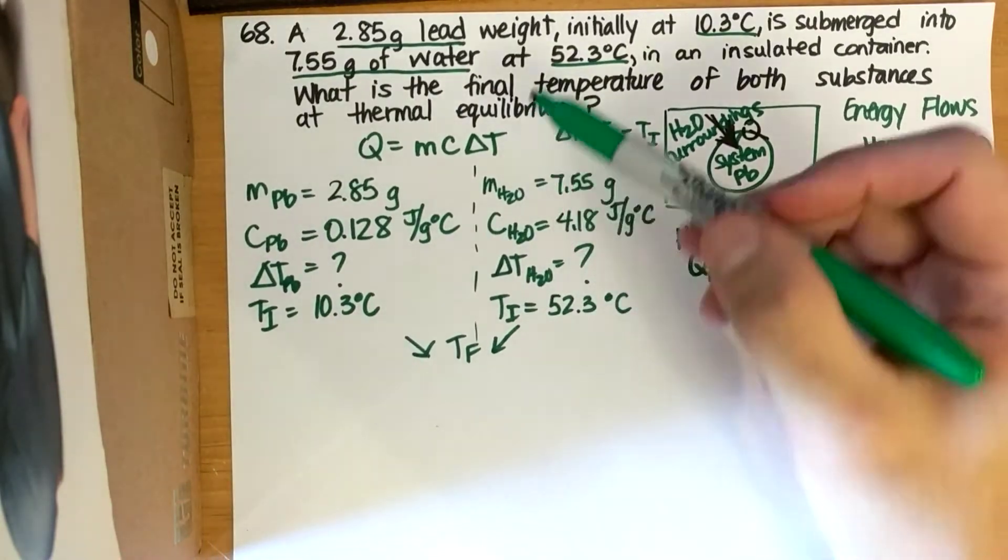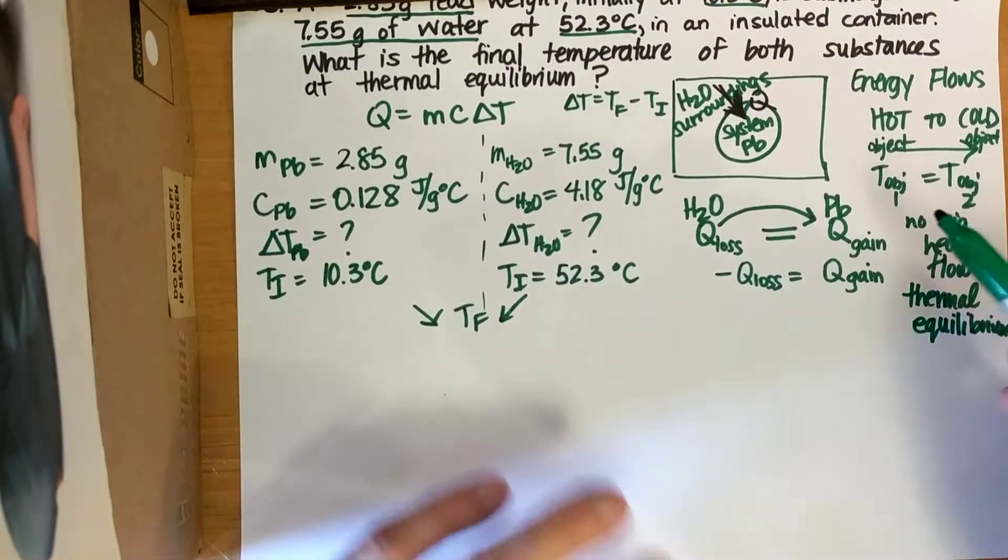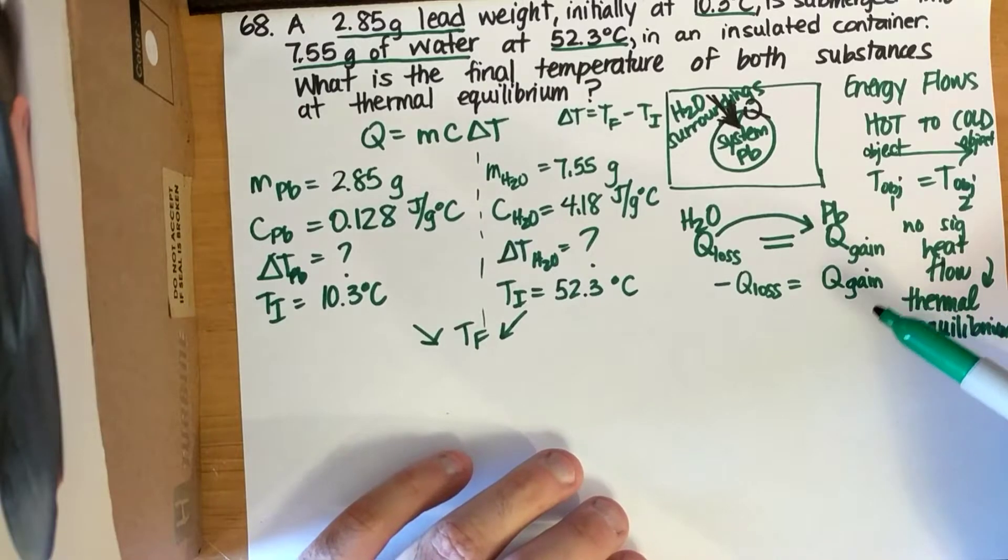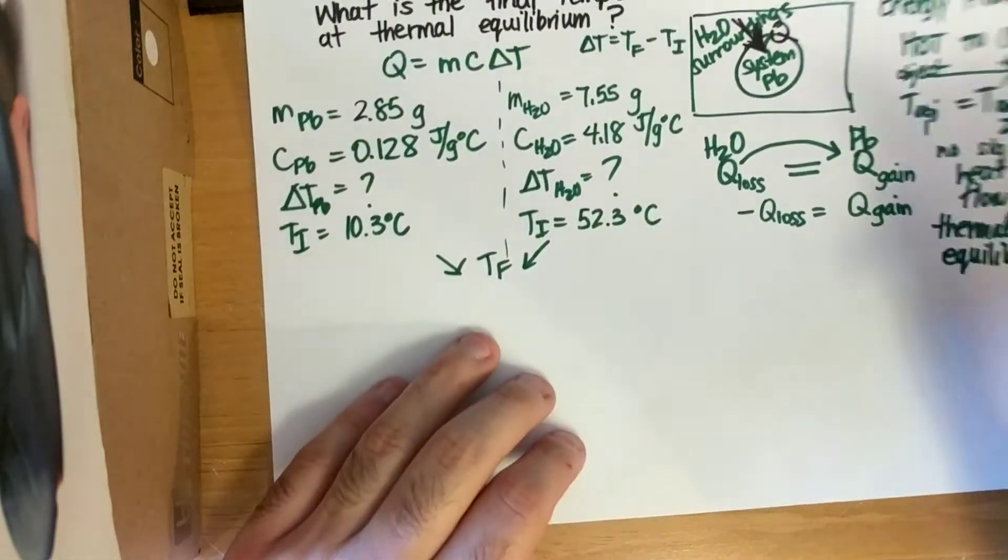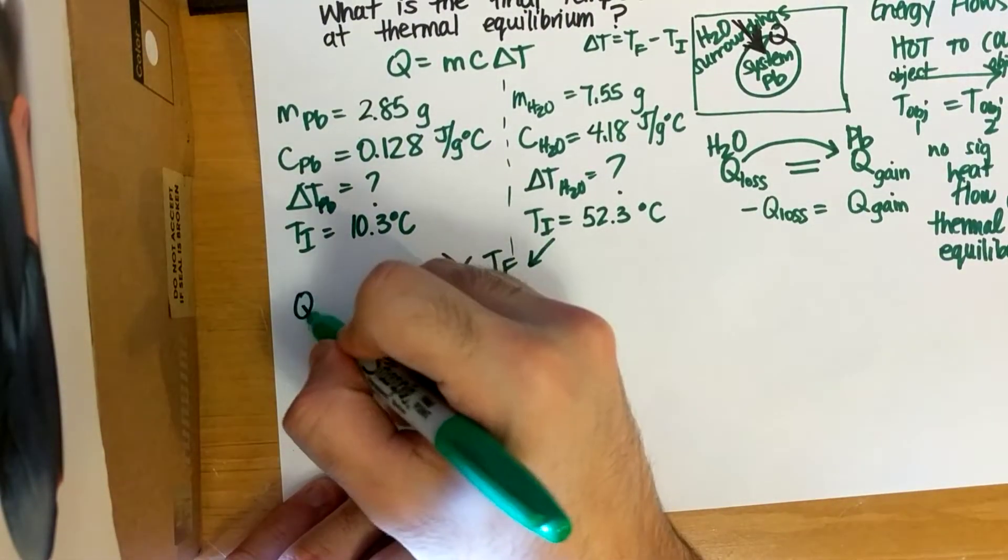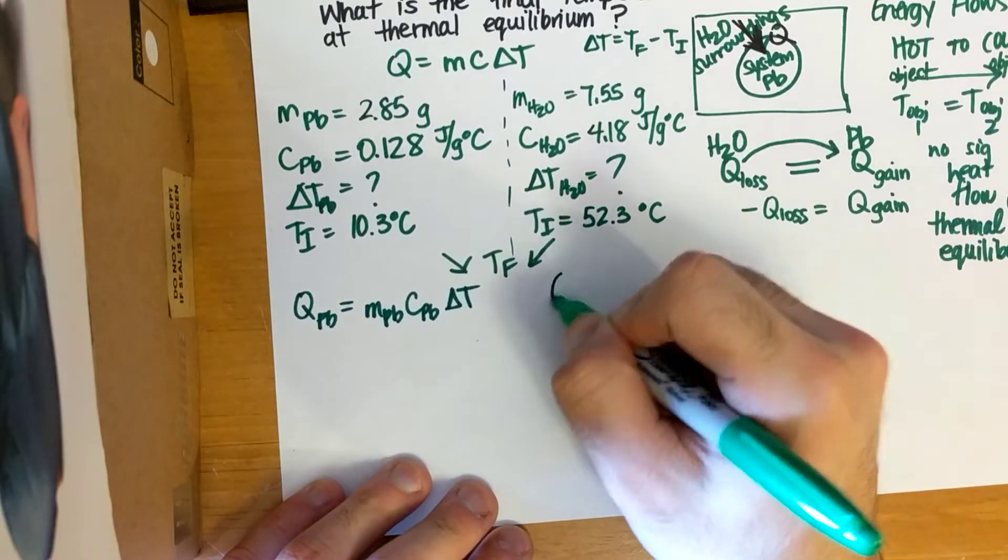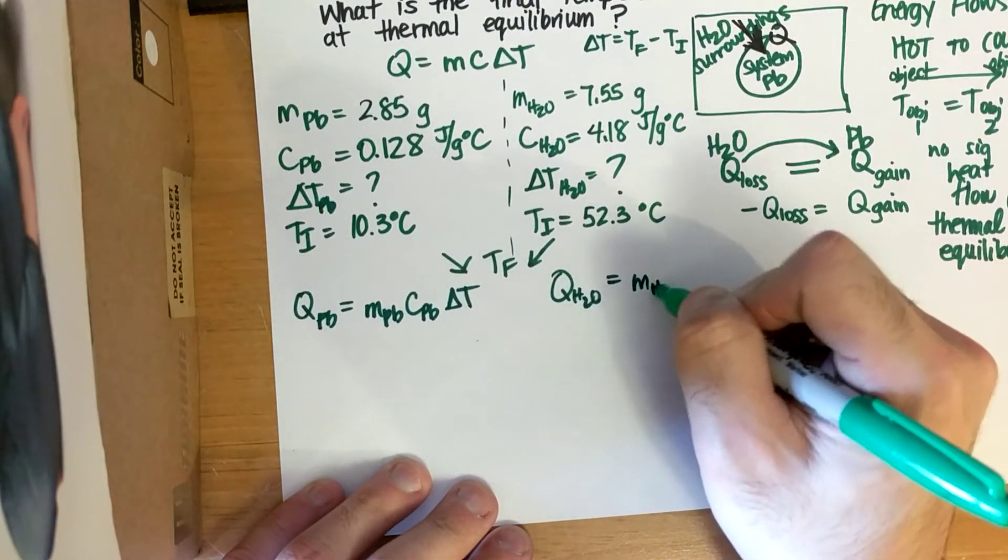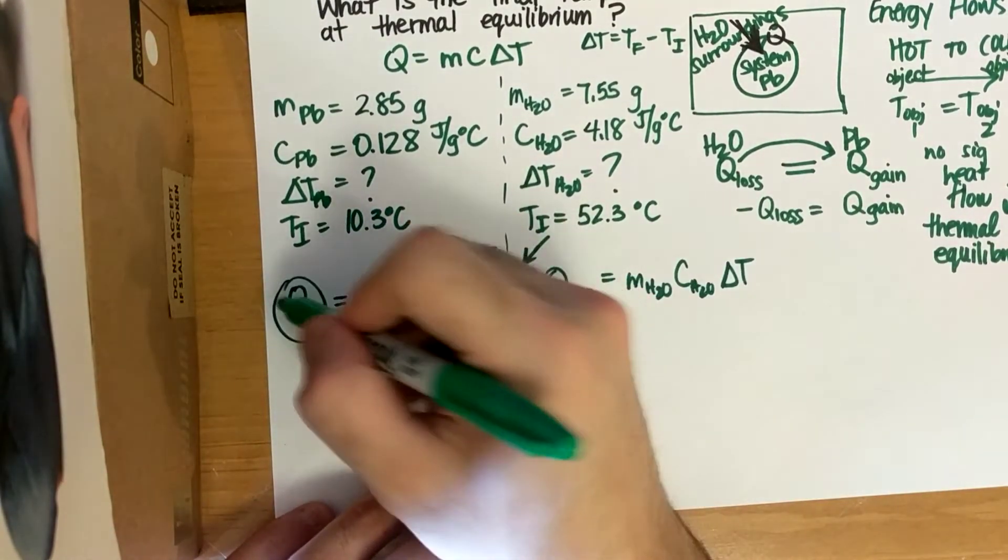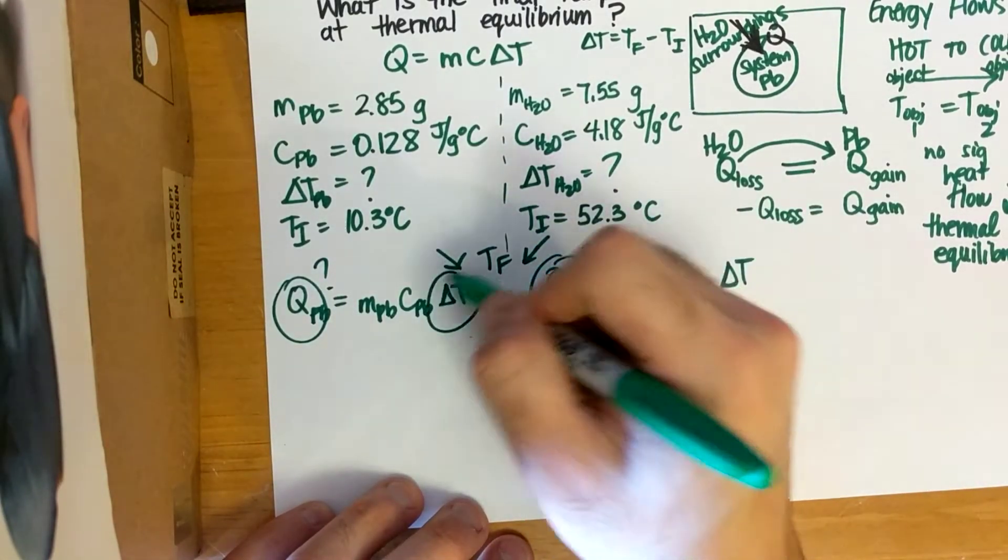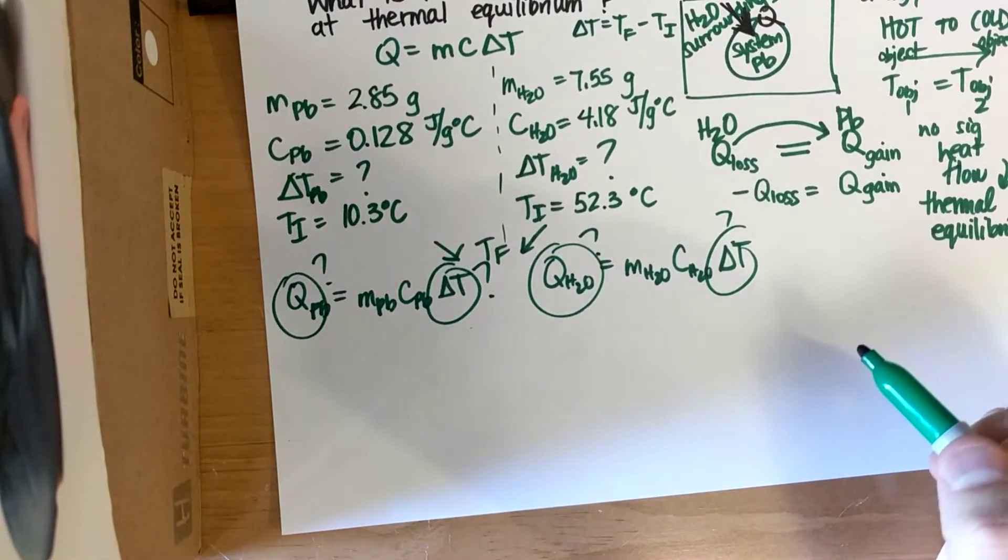So, we know for a fact that one value that these systems have in common is their final temperature. Now, I also do know this fancy equation that negative Q loss is equal to Q gain. Where is this going to come into play? Some of you might start trying to plug into an equation. You might do Q of lead is equal to M lead C lead delta T. Q H2O is equal to M H2O C H2O delta T. And you're going to come into an issue because you don't know Q and you don't know delta T. So, how would you solve this problem if we don't know Q and we don't know delta T?